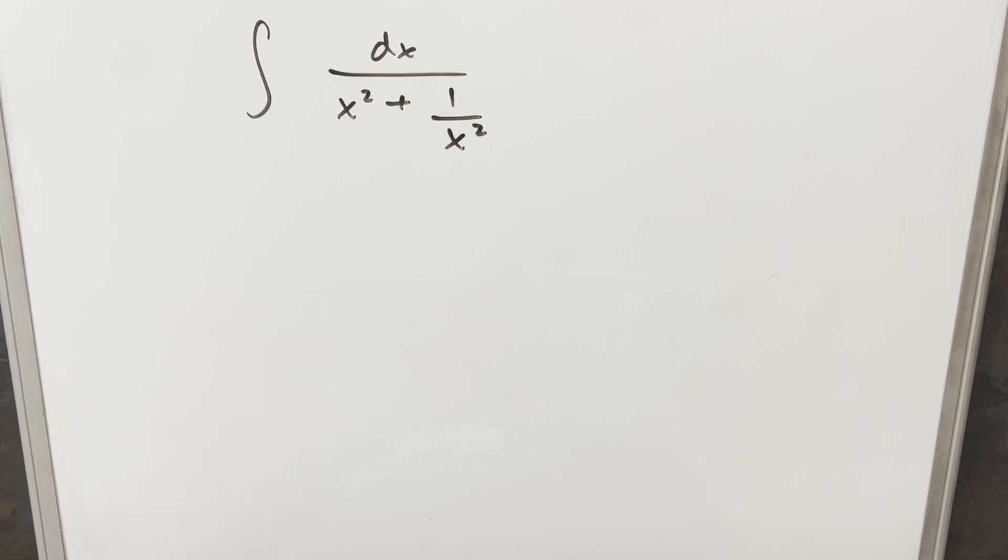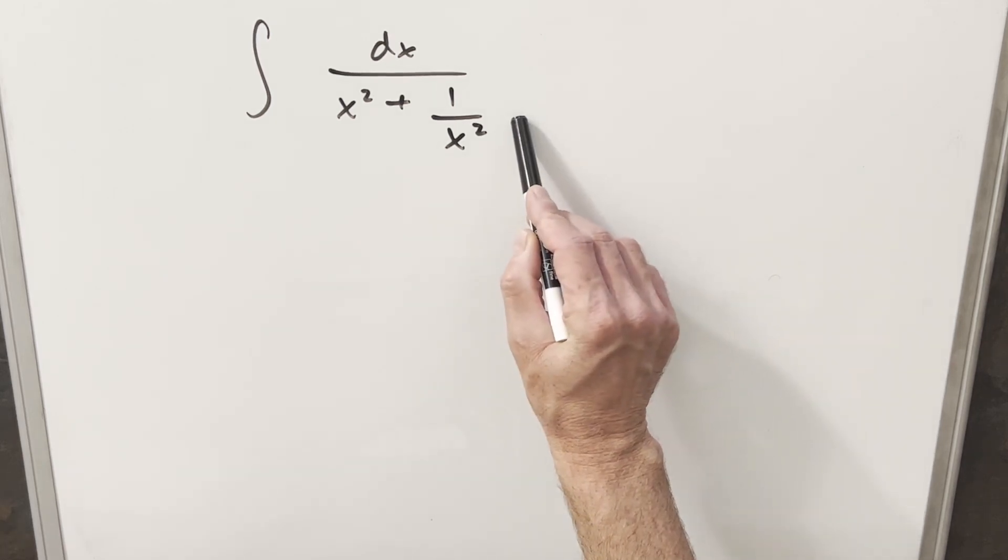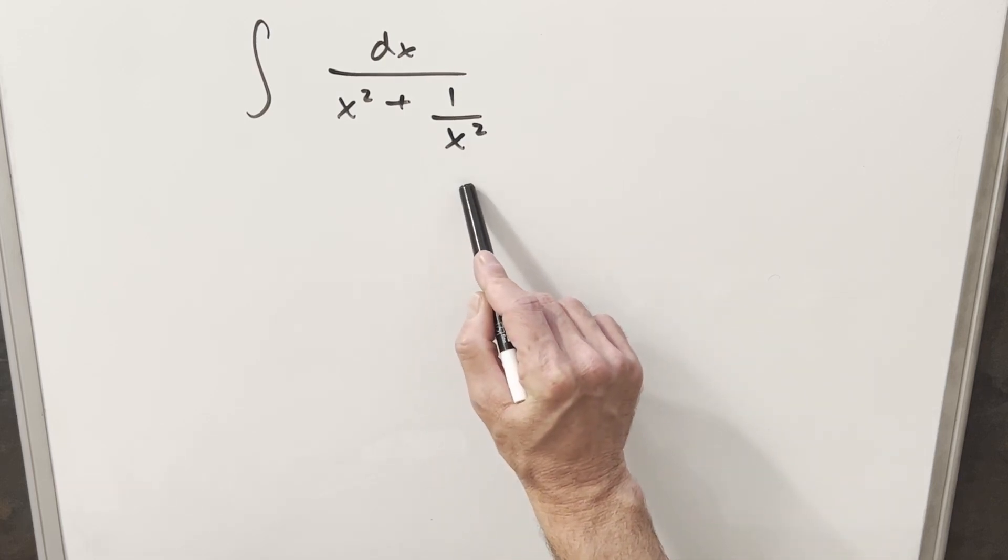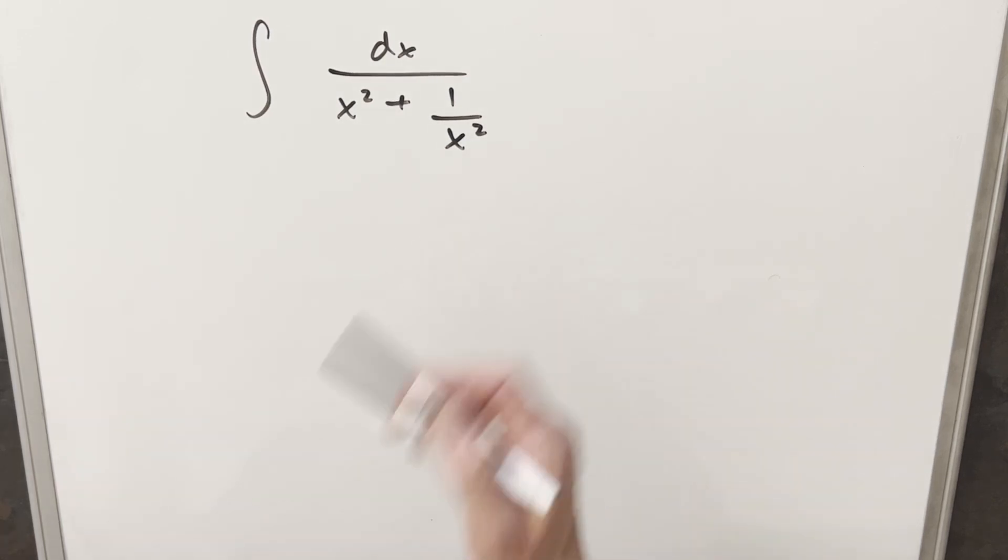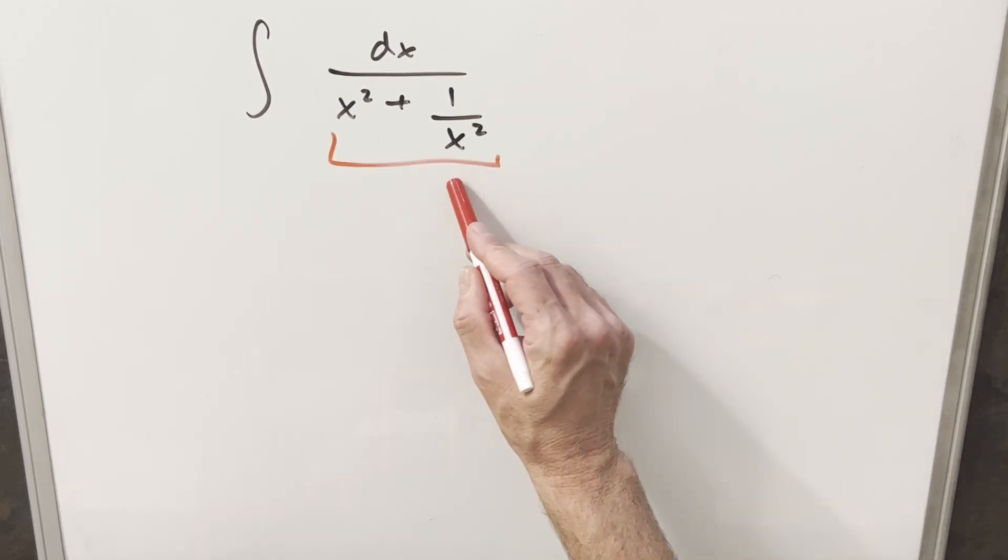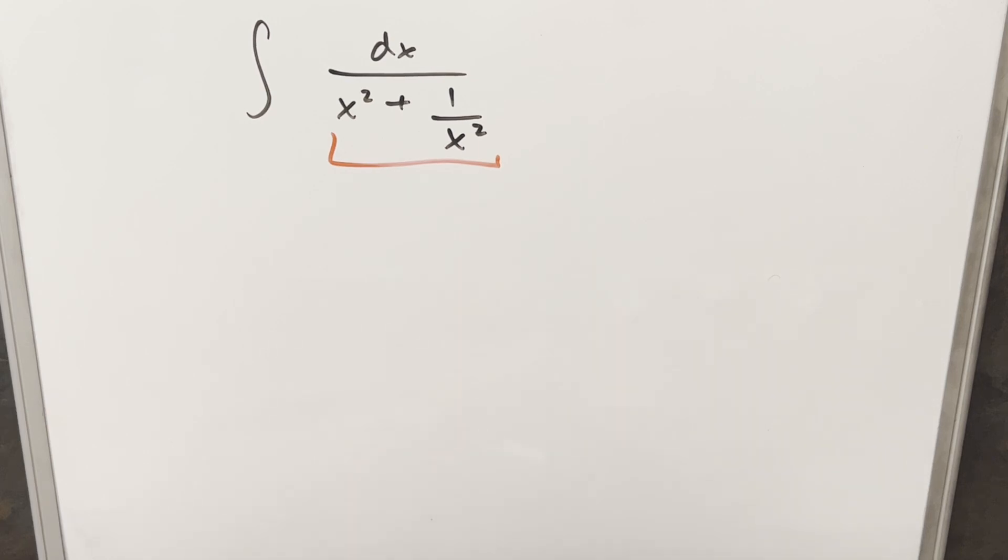My first thought right away was maybe I could just multiply an x squared in here, and then we'd have an x to the 4th plus 1 in the denominator, and that would work out fine that way. But what I was thinking about particularly was a trick that I've used in the past where what I want to do is make use of this x squared plus 1 over x squared type of thing.